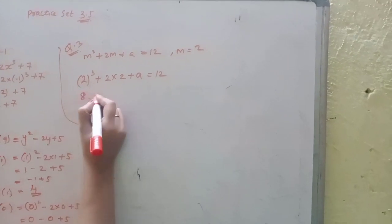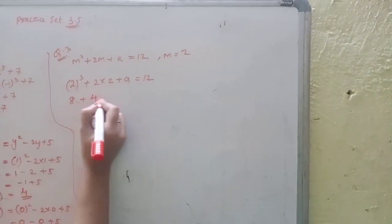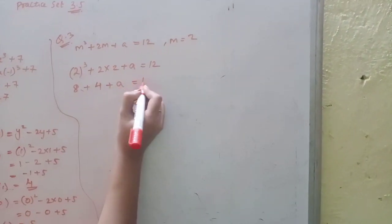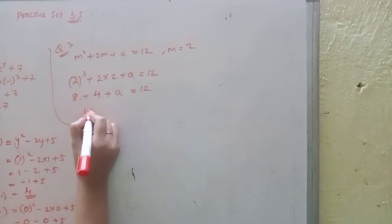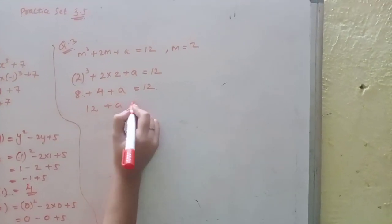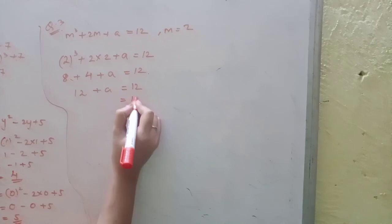2³ plus 2 into 2 plus a equals 12. 8 plus 4 plus a equals 12. 12 plus a equals 12. A ki value kya hogi? 0.